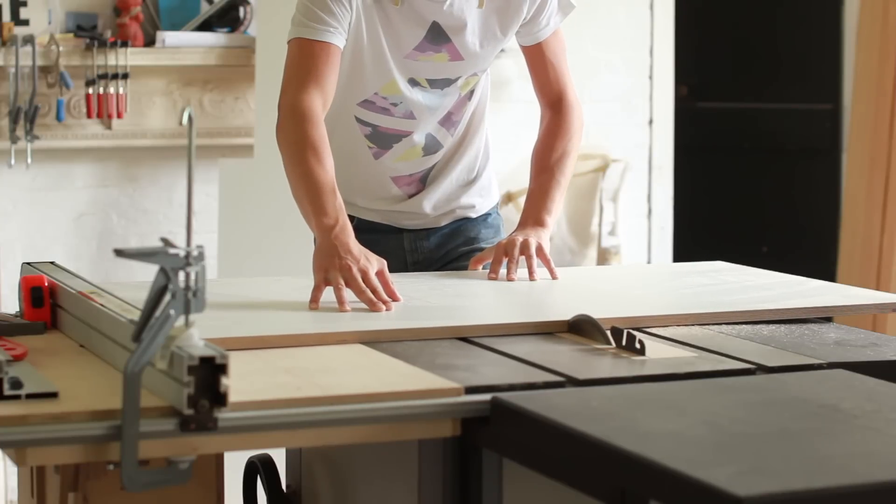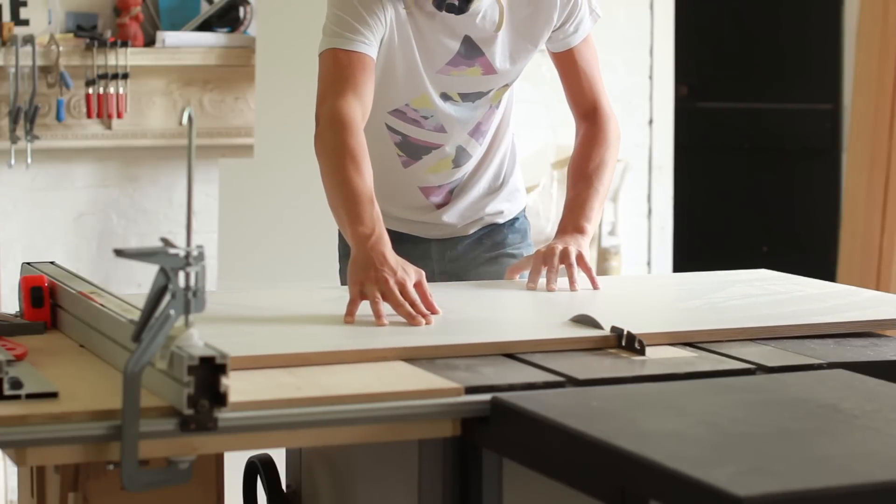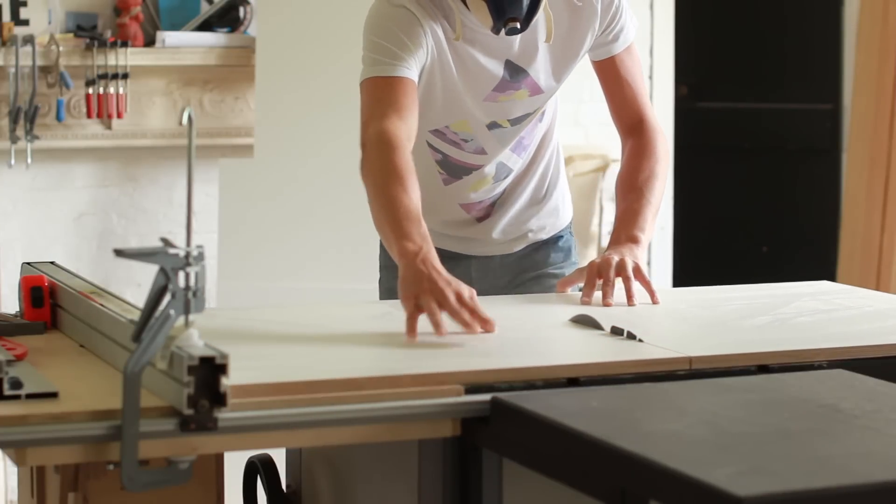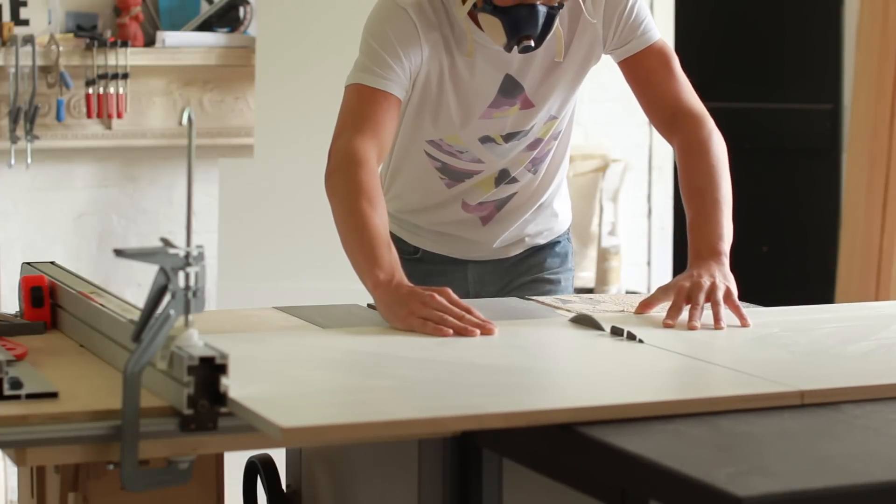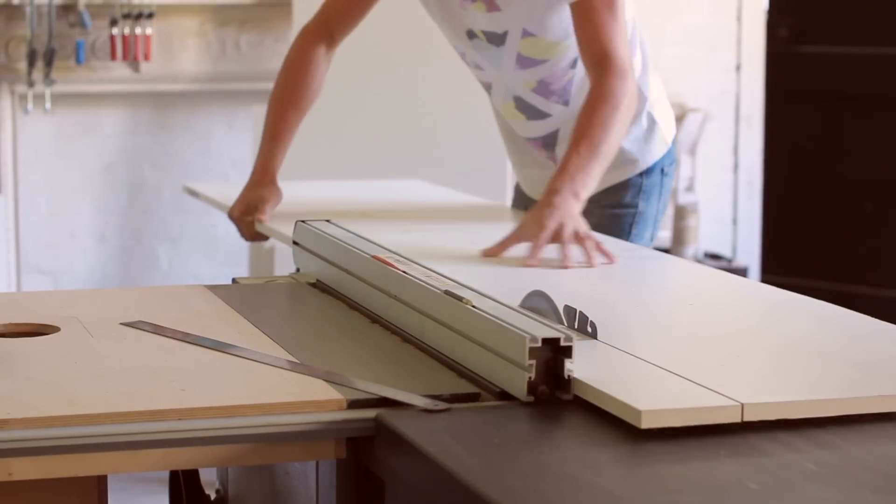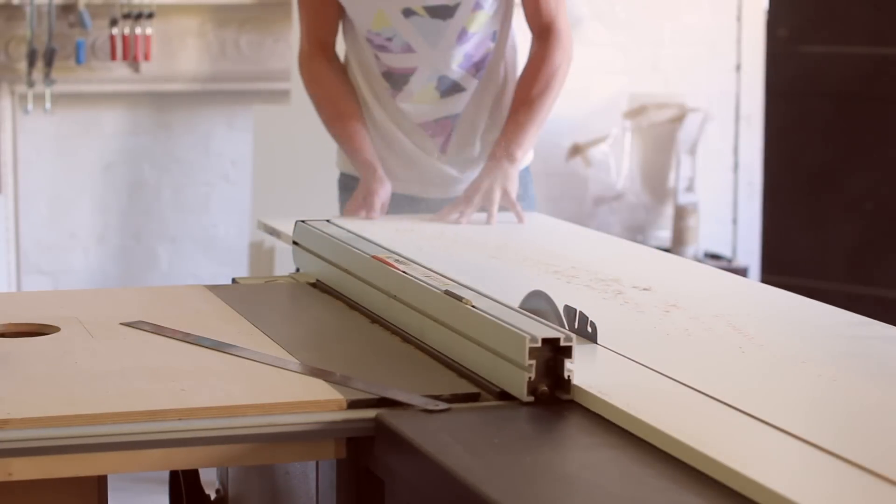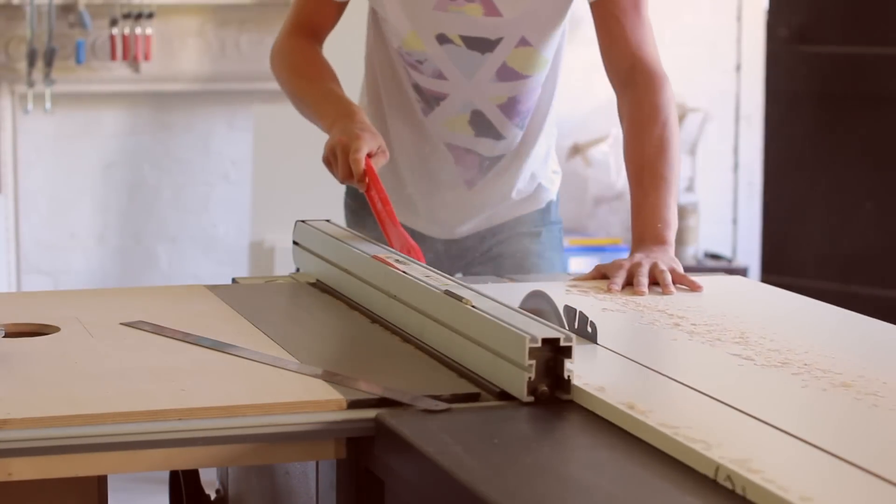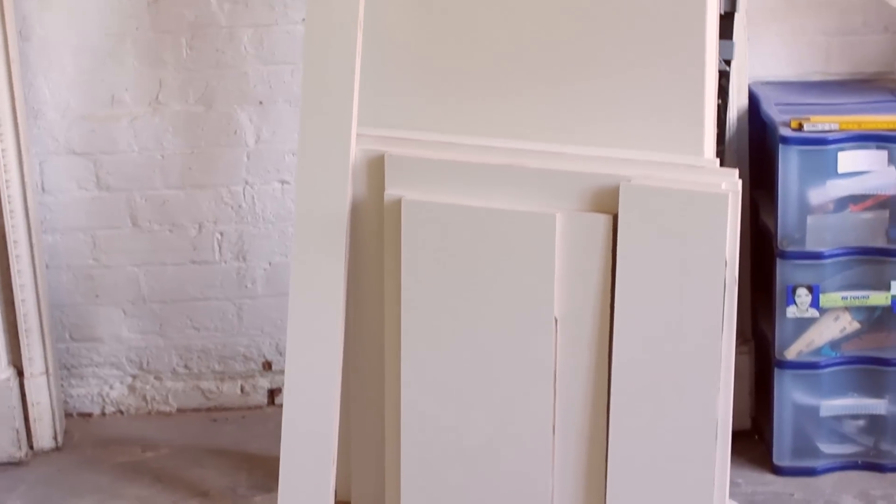I then cut the panels to final size at the table saw. In total there were four 680x665mm panels and one 580x665mm panel at the narrow end of the unit. Whilst I was at the table saw I also ripped a 100mm wide strip which I will later cut down to create the top frame which supports the quartz worktop.